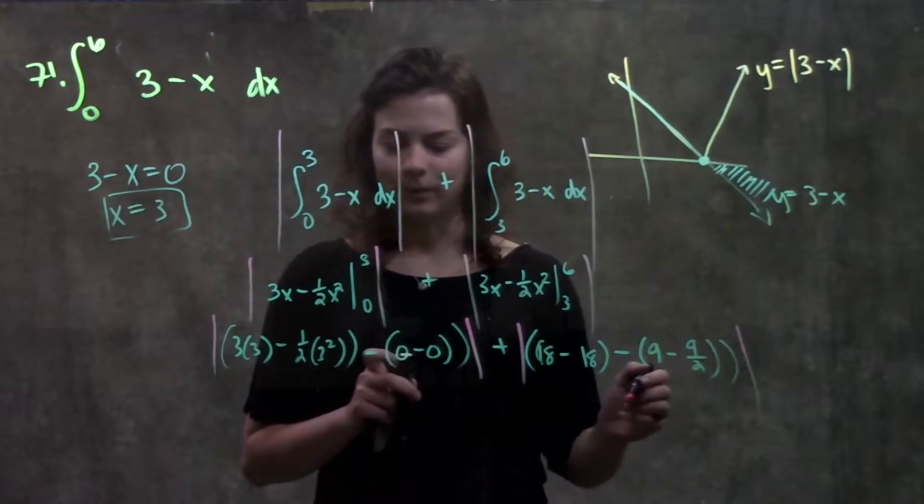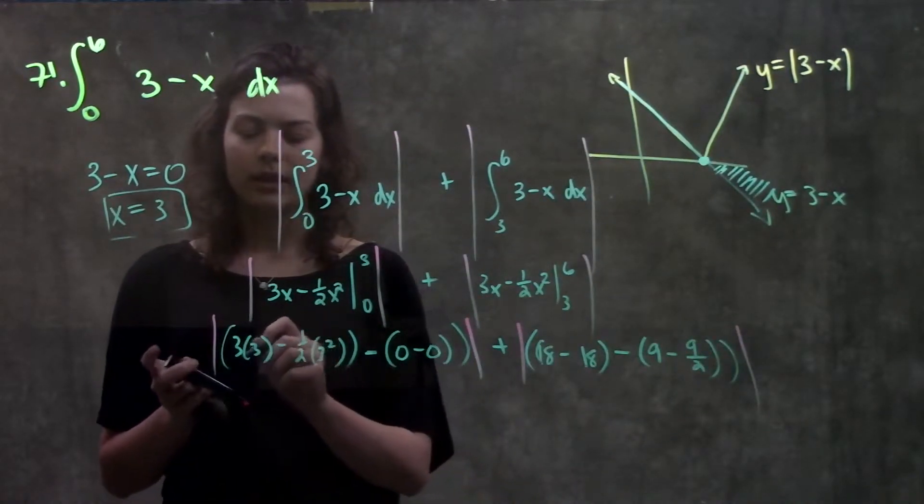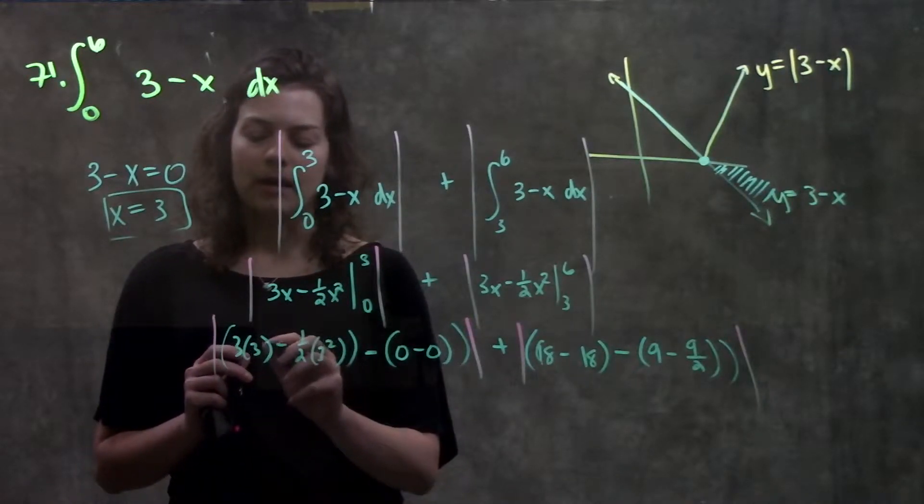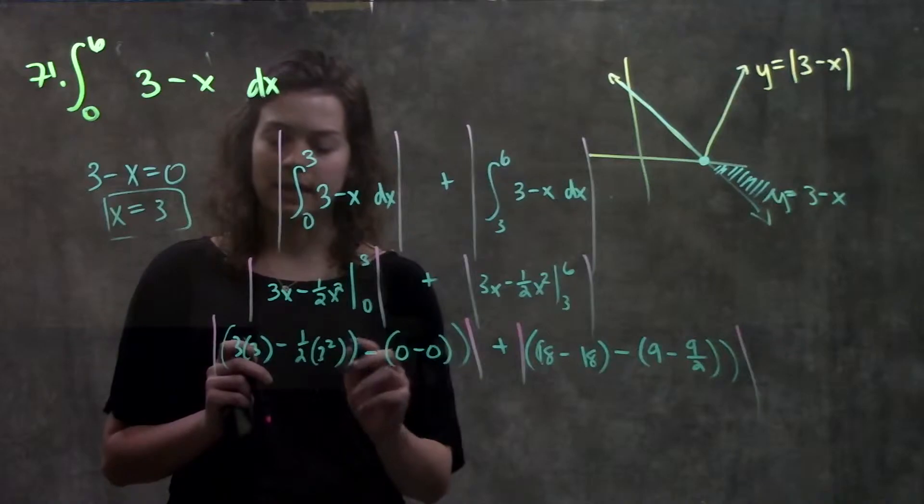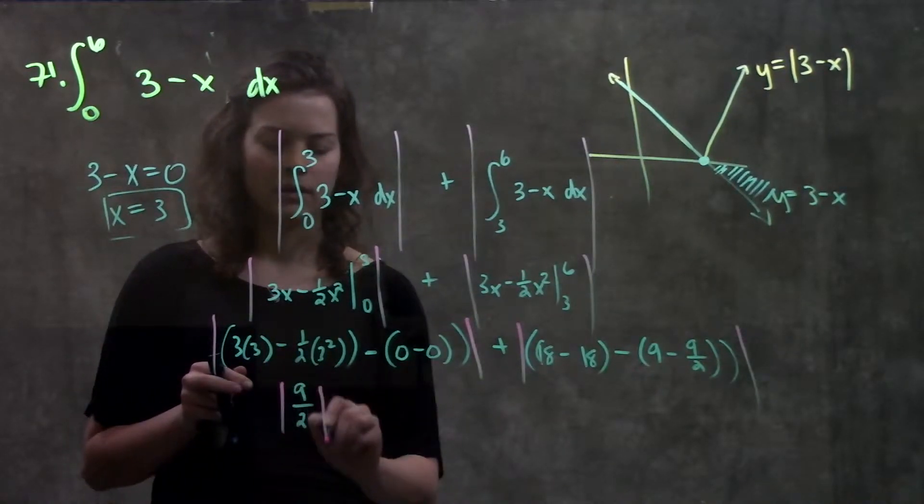And absolute value of all of this. And now you just go ahead and solve out your math, see what you get. So here, three times three gives me nine, minus nine over two. That will become 18 over two, minus nine over two. I get nine over two, absolute value of that, minus zero.